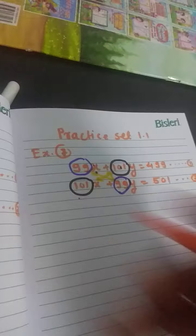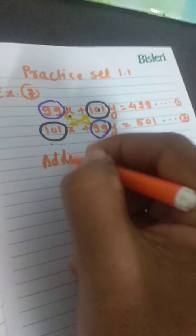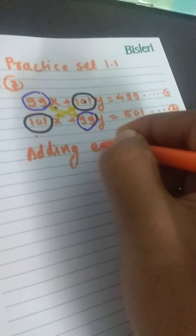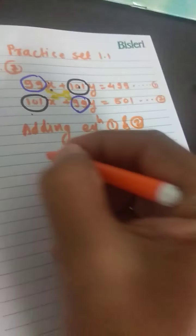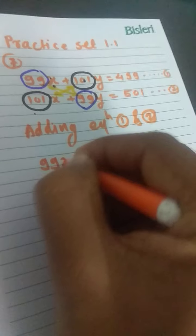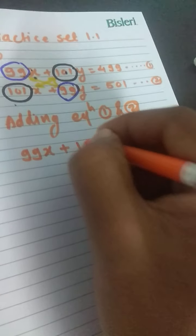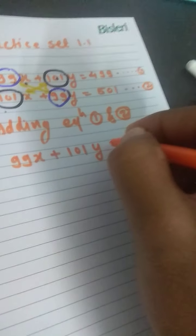First, we add the two equations. Adding Equation 1 and 2, we get 99x plus 101y equals